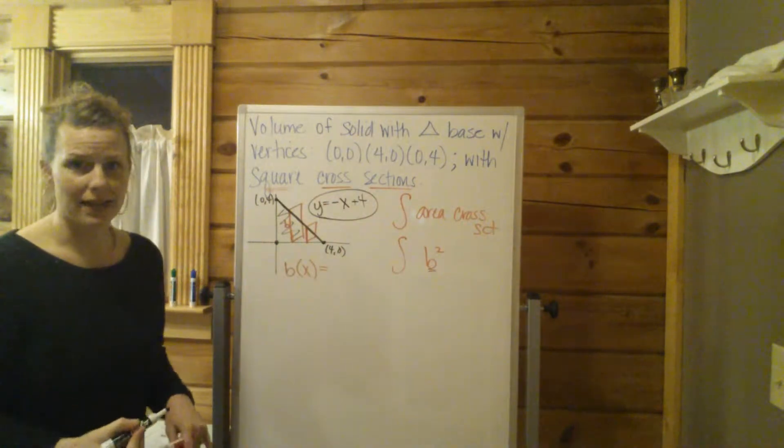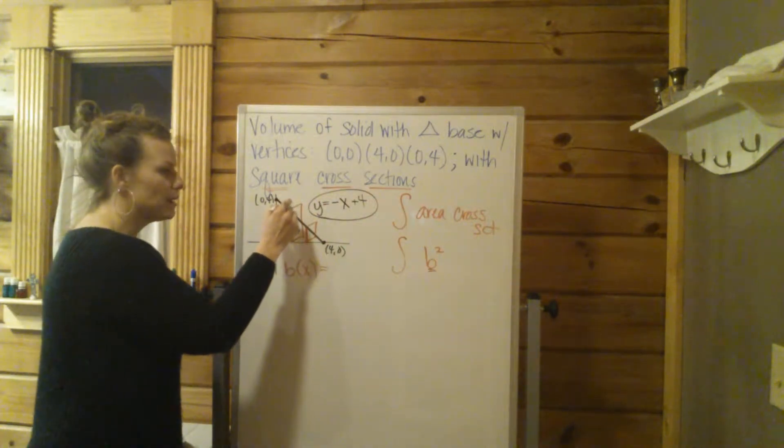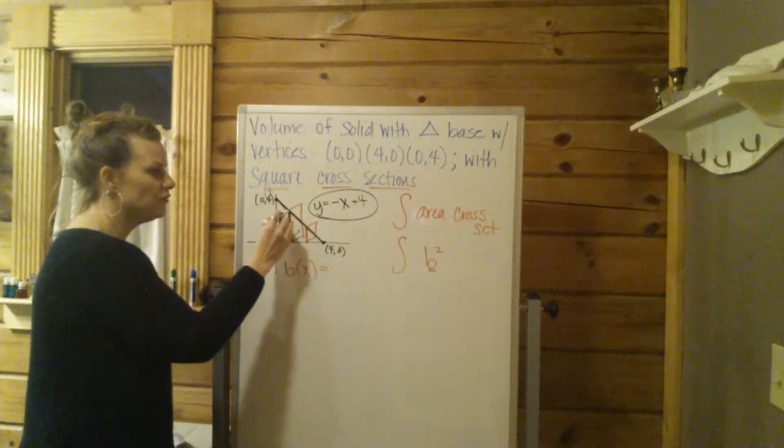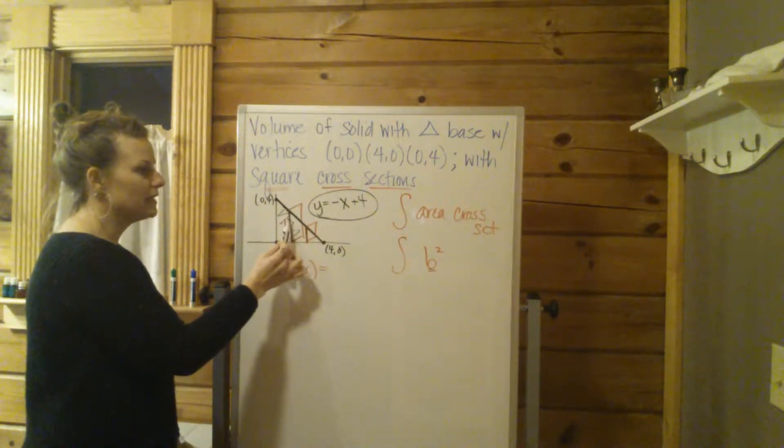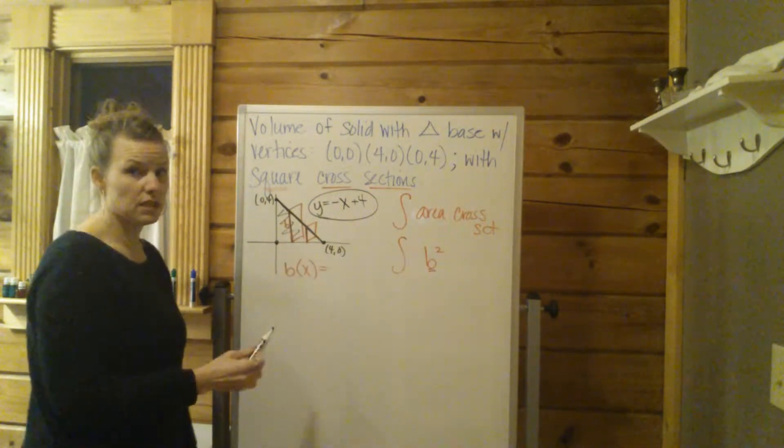That's the equation of that black line. That also represents the height of b every single time. No matter where b is, b is always going to equal negative x plus 4.